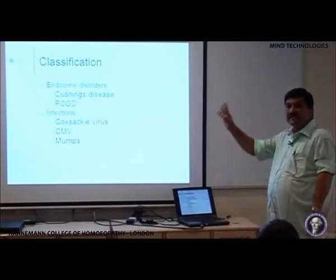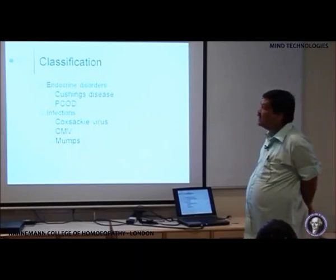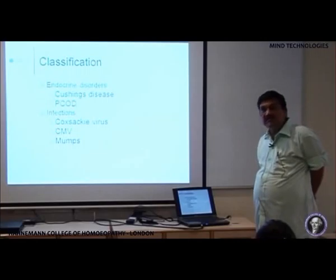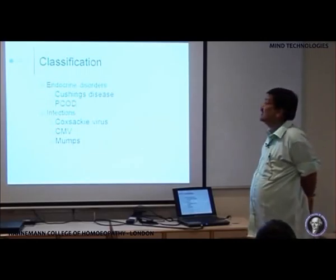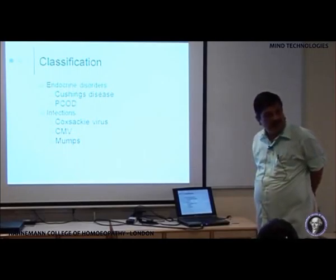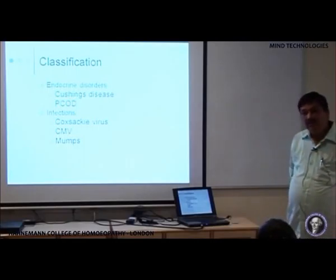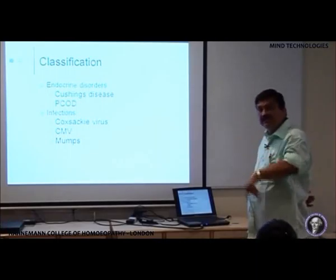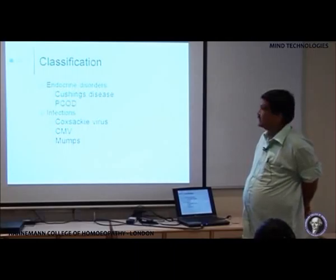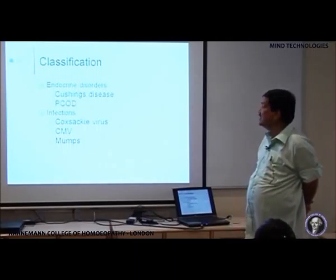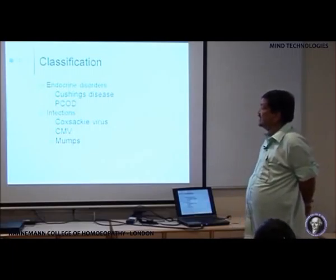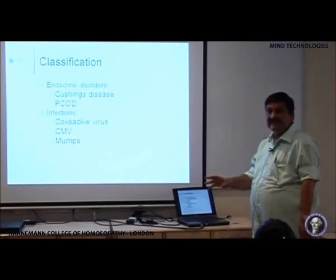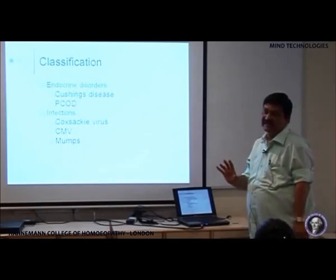Other endocrine diseases like Cushing's syndrome — meaning hyperadrenalism — can give rise to diabetes because of increased levels of steroids. PCOD or polycystic ovarian disease can also cause diabetes: multiple cysts develop in the ovaries, preventing follicle formation, leading to increased estrogen, hormonal disturbances, and induction of diabetes. Viral infections due to Coxsackie virus, Cytomegalovirus, and Mumps virus can induce diabetes through their direct destructive action on the pancreas — they lodge in, multiply in, and destroy pancreatic cells, giving rise to diabetes.